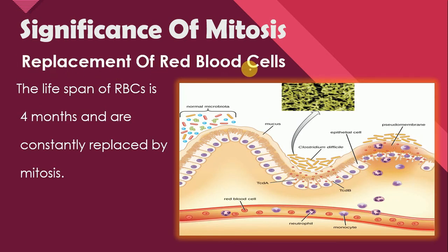Next is the replacement of red blood cells. The lifespan of RBCs is 4 months and they are constantly replaced by mitosis. The red blood cells present in our blood circulation have a life of just 4 months, so constantly after 4 months, old red blood cells are replaced by new ones. This replacement is because of mitosis.